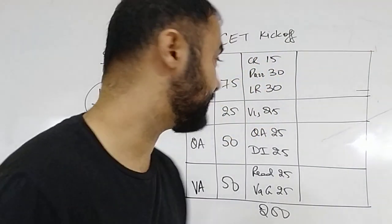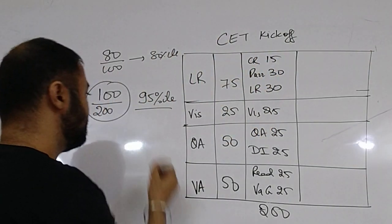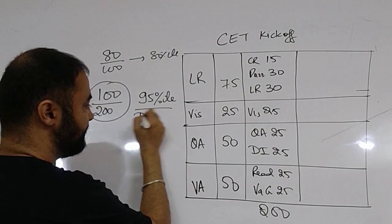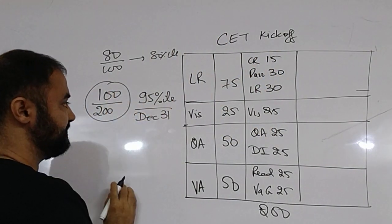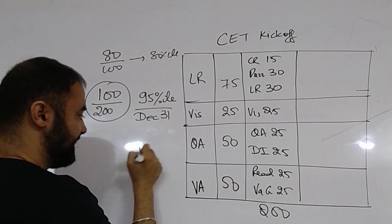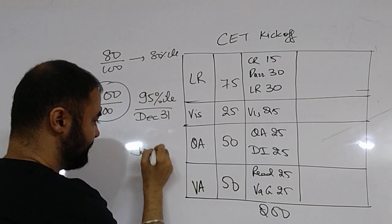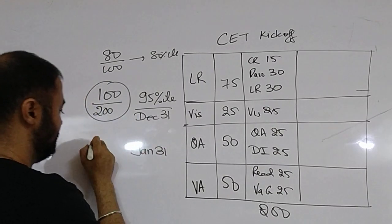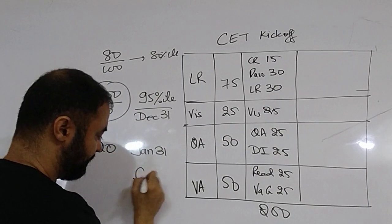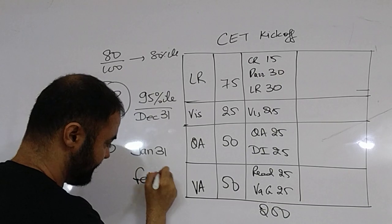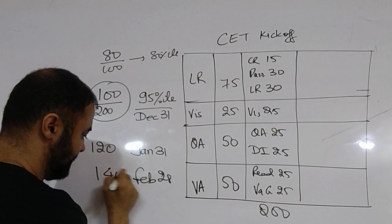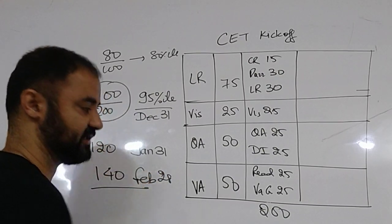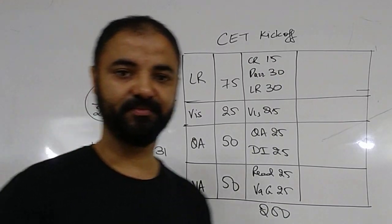Then we'll move the target further. December 31st is your target to achieve 100 marks. Then January 31st — 120. And February 28th — 140 is the target for JBIMS.